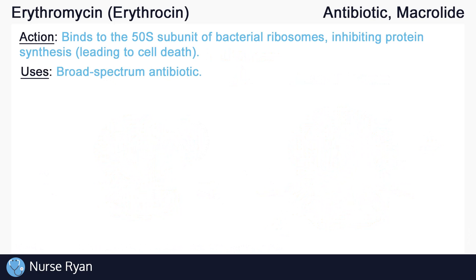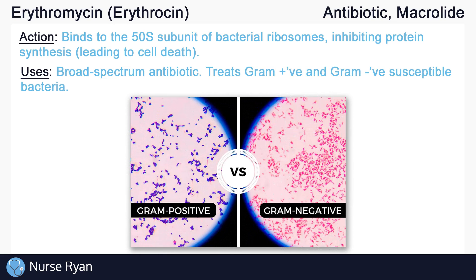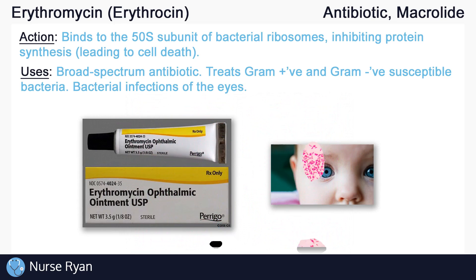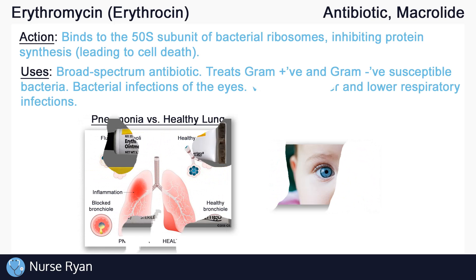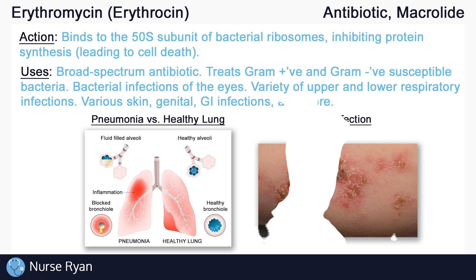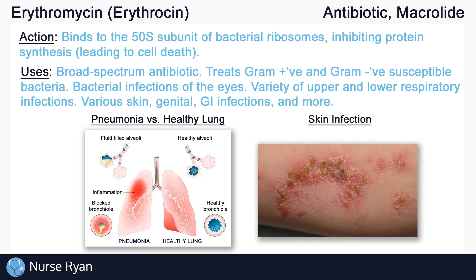Erythromycin is a broad-spectrum antibiotic, which means that it can act on a wide variety of bacterial infections. This includes both gram-positive and gram-negative susceptible bacteria. Erythromycin also comes in many different forms, which all have their respective uses. It comes as an ophthalmic ointment to treat various bacterial infections of the eyes, and is commonly used to prevent eye infections in newborn babies. Erythromycin also comes orally, intravenously, and as a topical gel, and can be used to treat a variety of both upper and lower respiratory infections, and various skin, genital, and GI infections. This is why it is considered a broad-spectrum antibiotic.